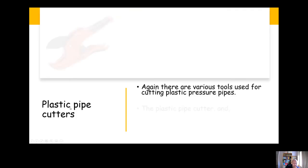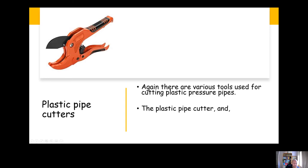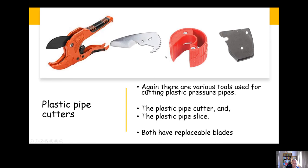Plastic pipe cutters - and again there's various tools used for cutting plastic pipe. This one here is a plastic pipe cutter and this one here is a plastic pipe slice. The sort of key difference between a plastic pipe slice and the more traditional pipe slice for cutting copper is that plastic pipe slice has actually got a blade more like a Stanley knife in there, whereas the more traditional one has a cutting wheel. These have got replaceable blades like you can see.